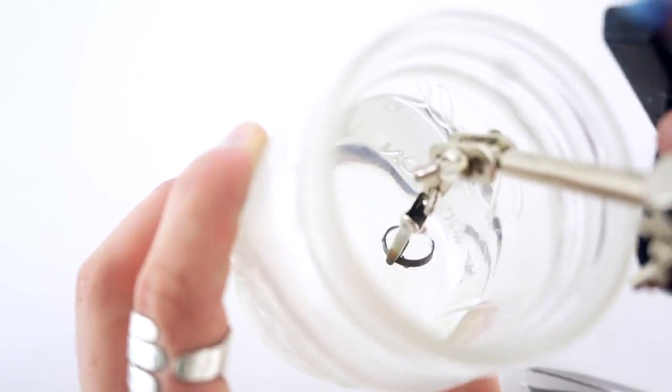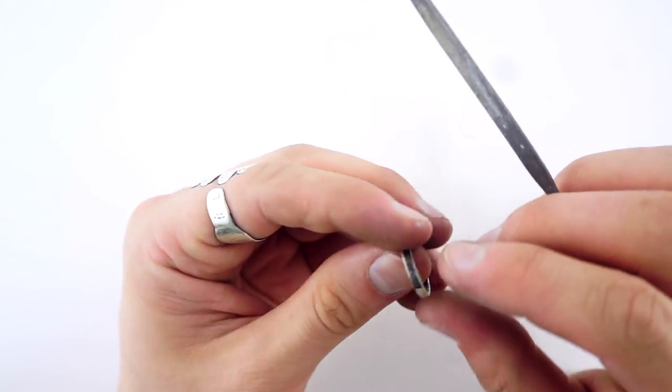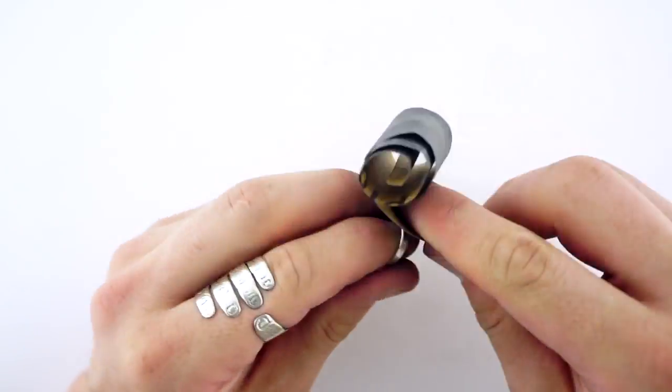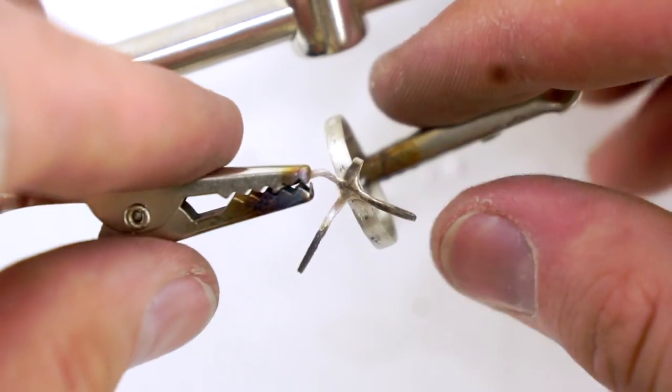So hard solder melts at the highest temperature, making it the hardest to melt. Next, there's medium, and then easy, being the easiest to melt. So after filing down the band and getting rid of any evidence of a seam, I'm going to solder the prongs onto the band, and I'm going to use easy solder to do that.